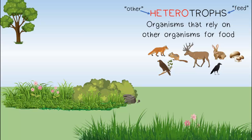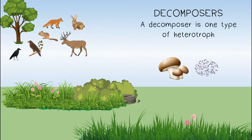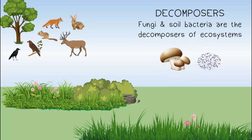Decomposers are one type of heterotroph. They obtain food by chemically decomposing dead organisms. Fungi and soil bacteria are the decomposers of ecosystems.